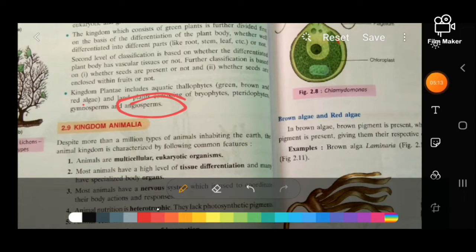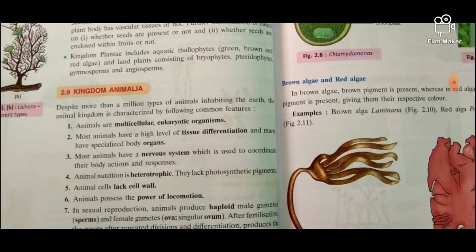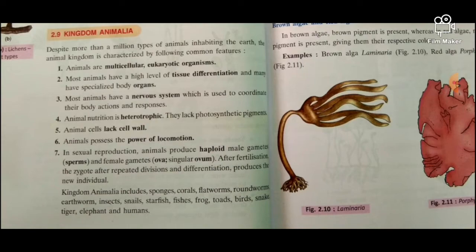Despite more than a million types of animals inhabiting the earth, the animal kingdom is characterized by the following common features: animals are multicellular, eukaryotic organisms. Most animals have a high level of tissue differentiation, many have specialized body organs, and most have a nervous system to coordinate body actions and responses.